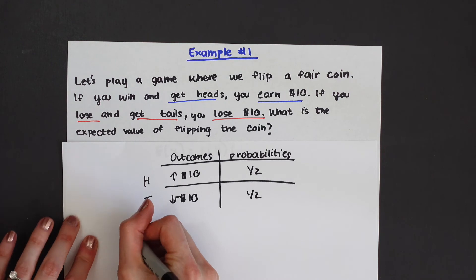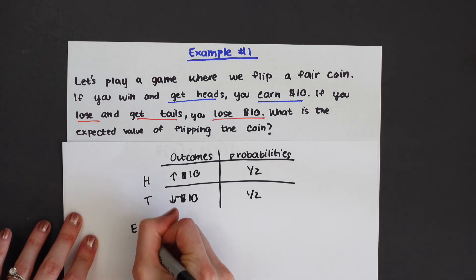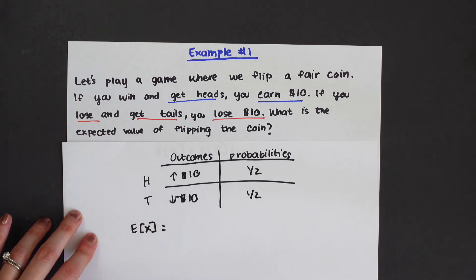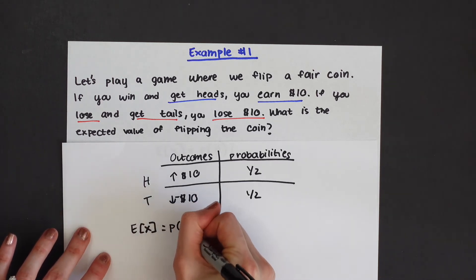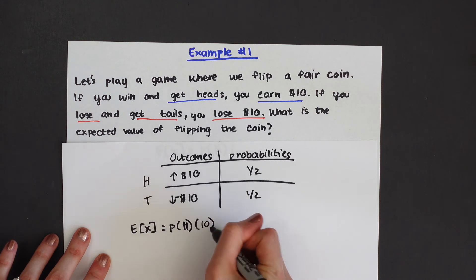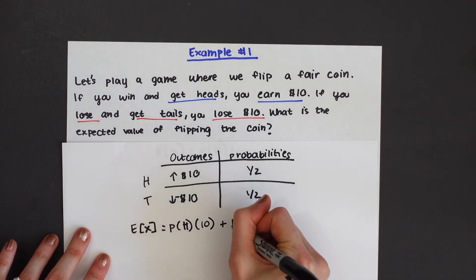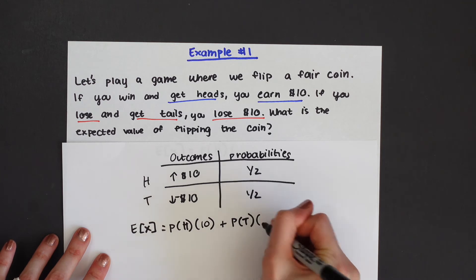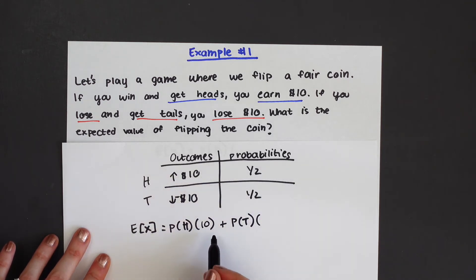Now when we find the expected value let's write out the formula E[X]. We're just gonna break out the formula but now pertaining to this problem. We want the probability of when we get heads and then we want the dollar amount we're gonna get when we get heads. The outcome, the dollar amount we get when we get heads is ten dollars. And then we're gonna add this to the probability of getting tails times the outcome of tails which is minus ten dollars.